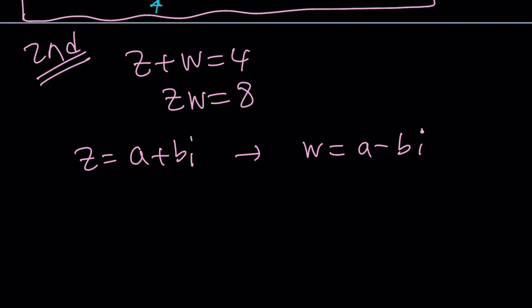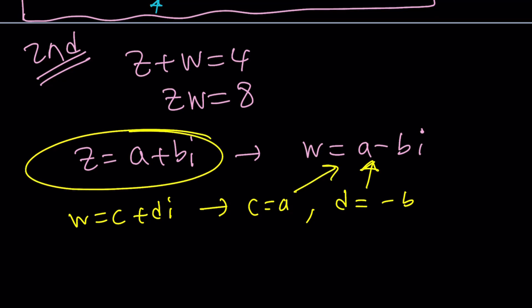So these are two conjugates or complex conjugates. They have to be. And even if you just set the following. Like let's say okay I want to set w equal to c plus di and then plug it in. You would find out that c equals a and d equals negative b which would again indicate that these numbers are conjugates. Great.